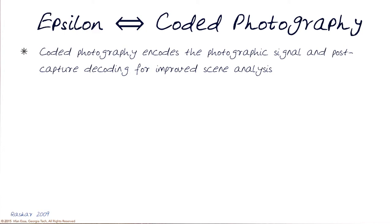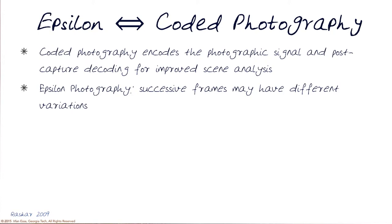Epsilon photography basically says: rather than capture one image with all of that information, let's capture a series of images — a sequential set of images that may have those different variations.